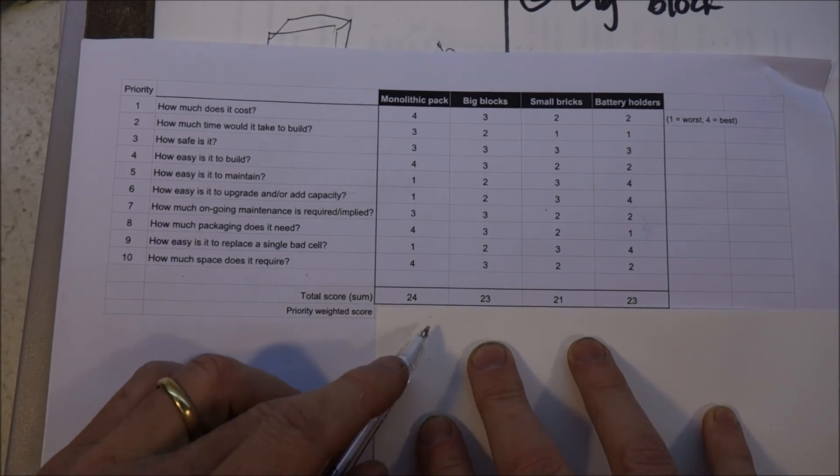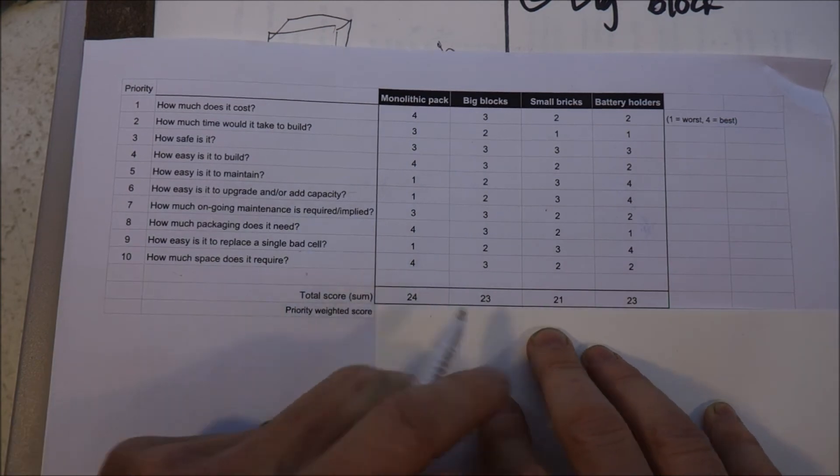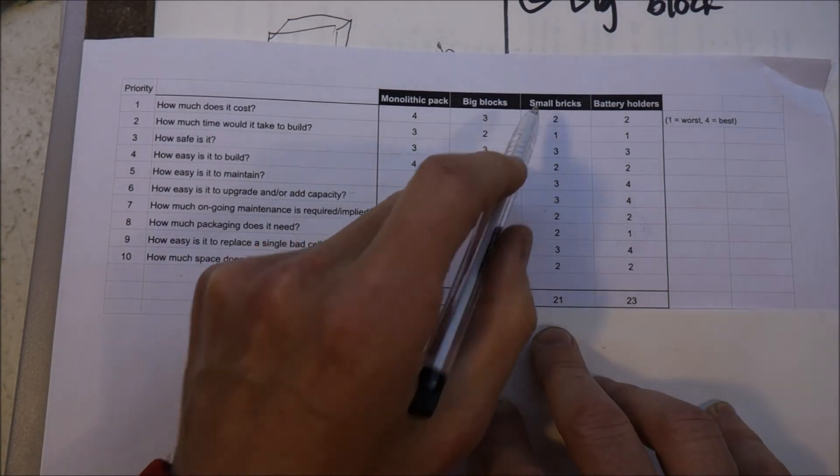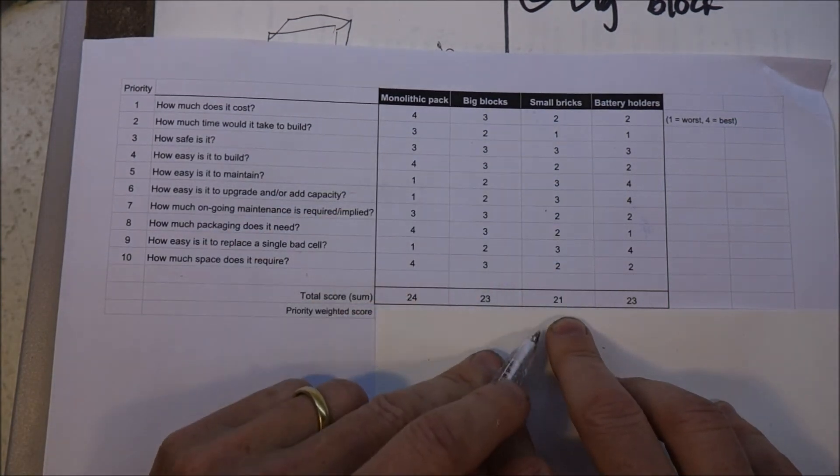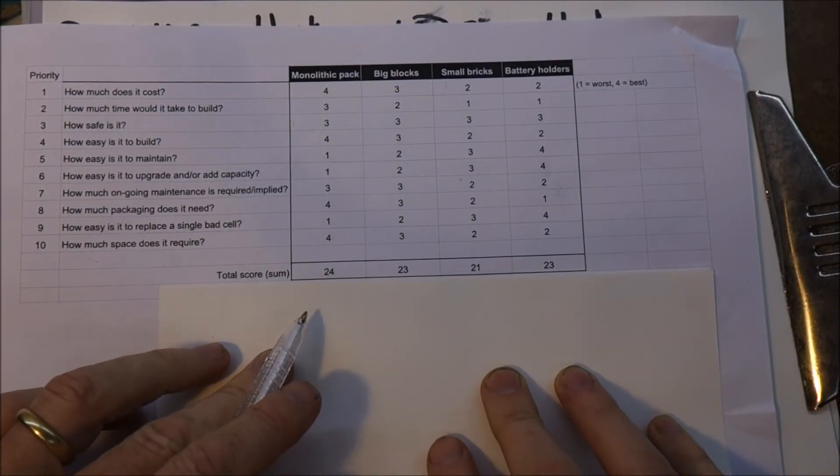Well, I was hoping there'd be some nice clear indicator that my preferred option, the small bricks scenario, was way better, but they're all within three points of each other, so that doesn't really help me.